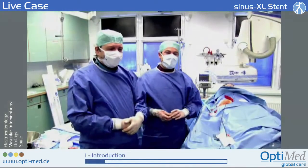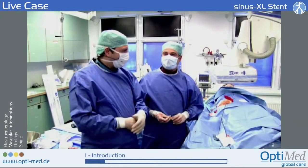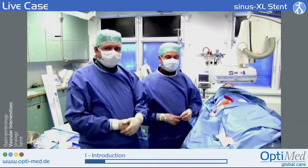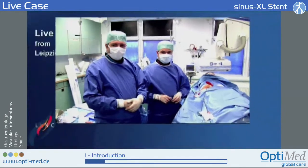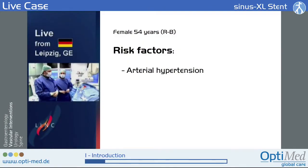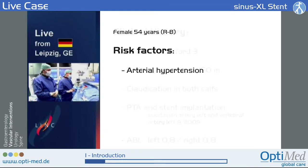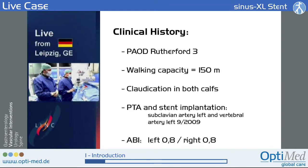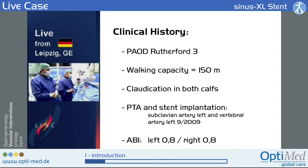Good morning. I'm here with Matthias and we want to show you another interesting case. This is a female patient, 54 years old, risk factors: arterial hypertension. Clinical history: PAOD Rutherford 3, walking capacity around 150 meters, claudication at both calves.